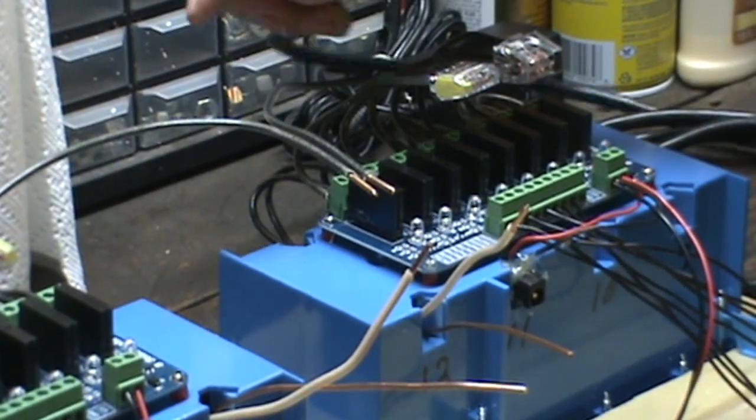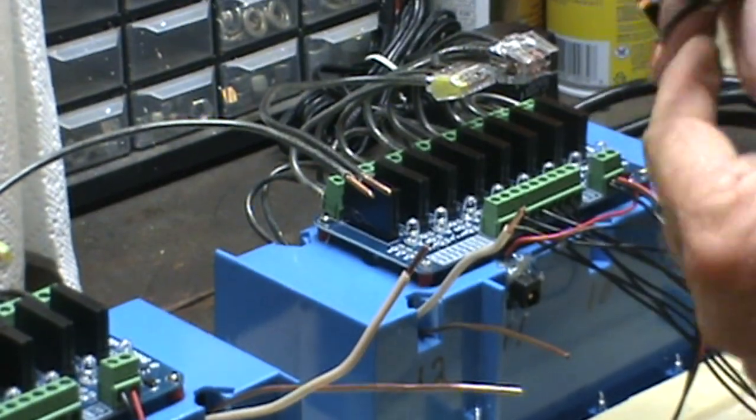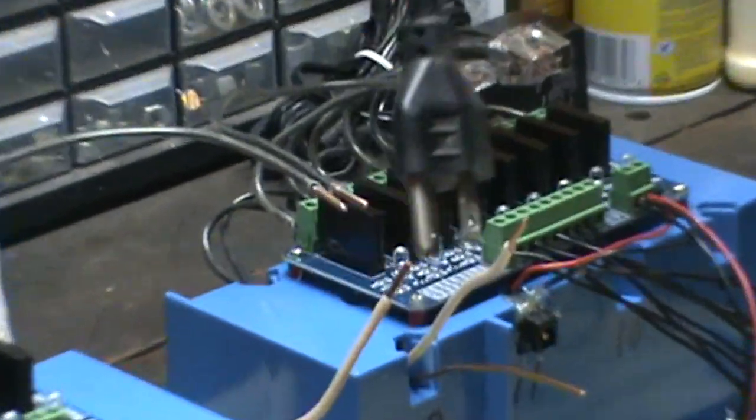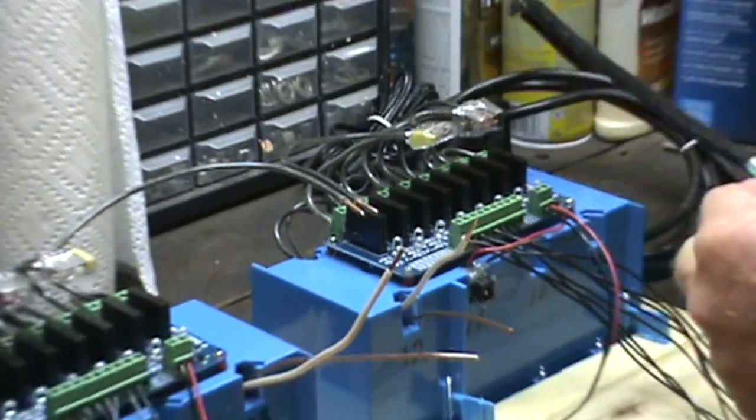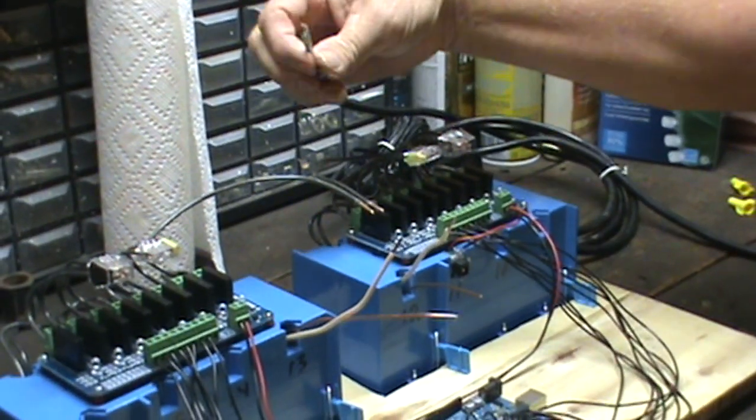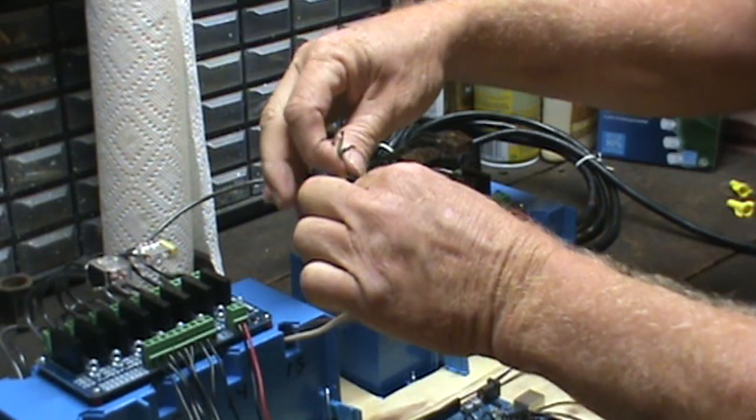We're going to finish connecting the power cord right here. This is just a cord that came off an old piece of equipment I had. So we're going to connect the colors together here. The blacks are your hots.